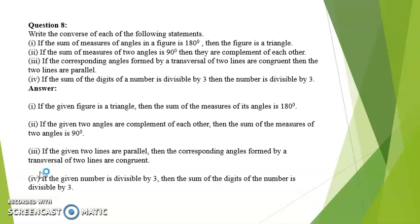Fourth: if the sum of the digits of a number is divisible by three then the number is divisible by three. Converse: if the given number is divisible by three then the sum of the digits of the number is divisible by three.